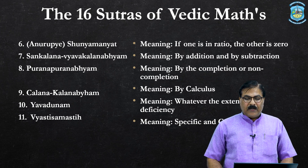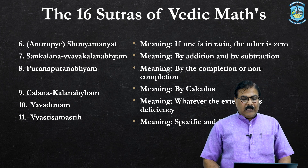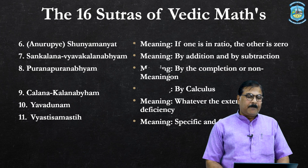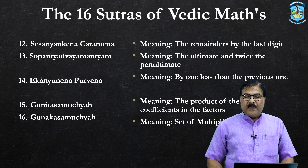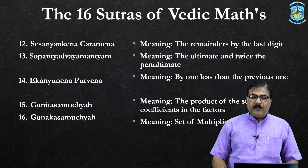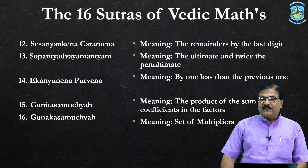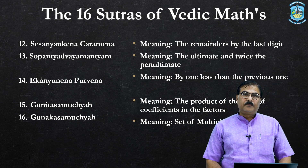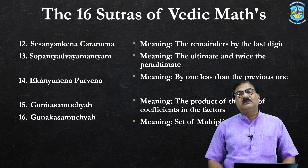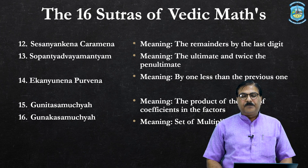Ninth sutra is 'by calculus.' Yavadunam — 'whatever the extent of its deficiency.' Eleventh is 'specific and general.' Twelfth is 'the remainder by the last digit.' Thirteenth is 'the ultimate and twice the penultimate.' Fourteenth is 'by one less than the previous one.' Fifteenth is 'the product of the sum of coefficients in the factors.' And the last sutra is 'set of multipliers.'